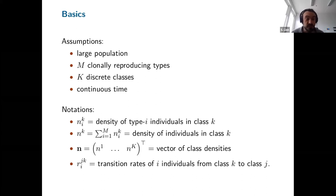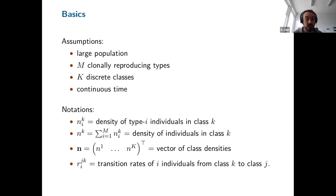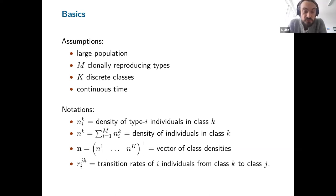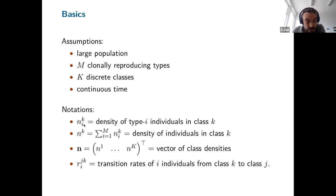The notations we'll need: N_ik is the density of type i individuals in class k — so how many individuals with genotype i are present in class k. N_k is the sum over all genotypes, giving the total density in class k. You can collect all these densities in a vector N of class densities. Very importantly, you have the transition rates of type i individuals from class k to class j, noted R with subscript i and superscript jk. Everything about class is a superscript, everything about types is a subscript.